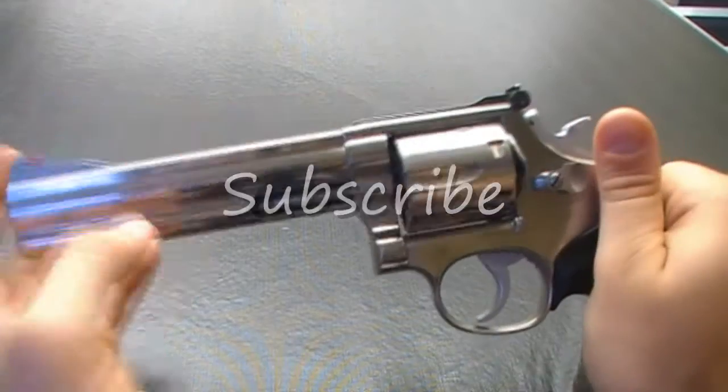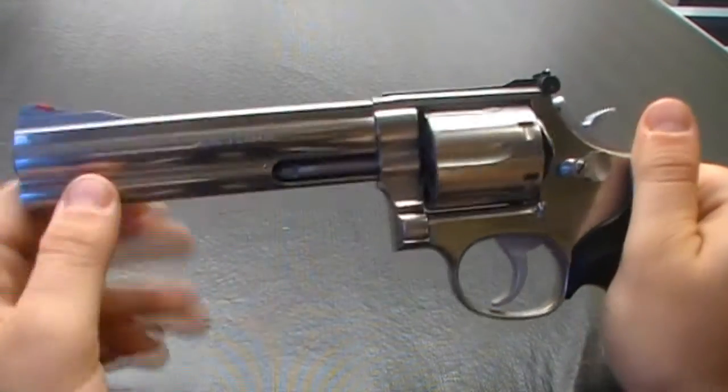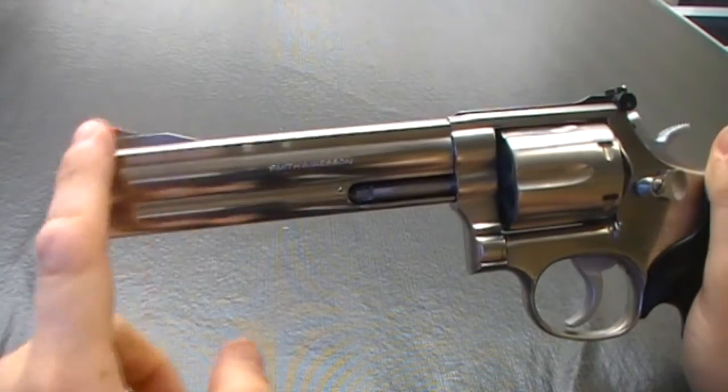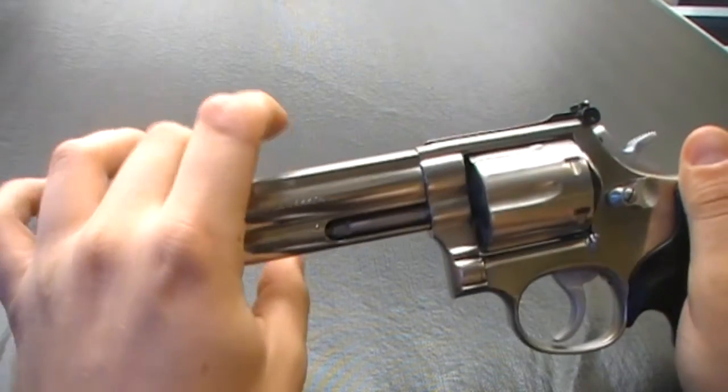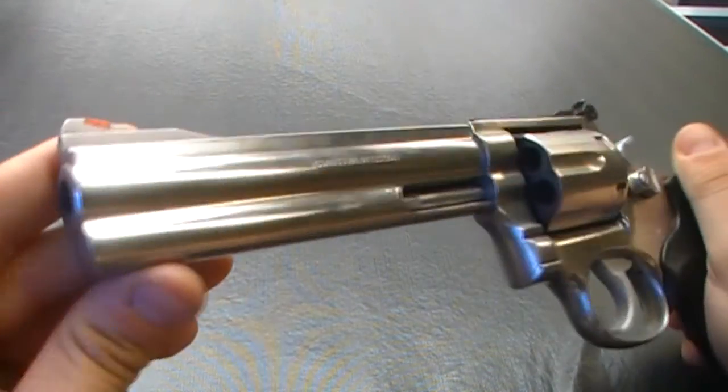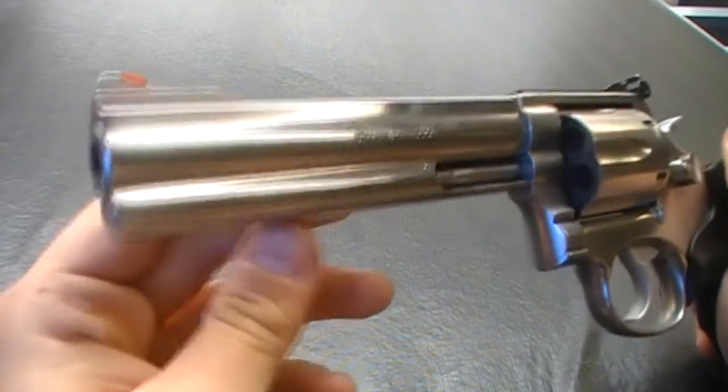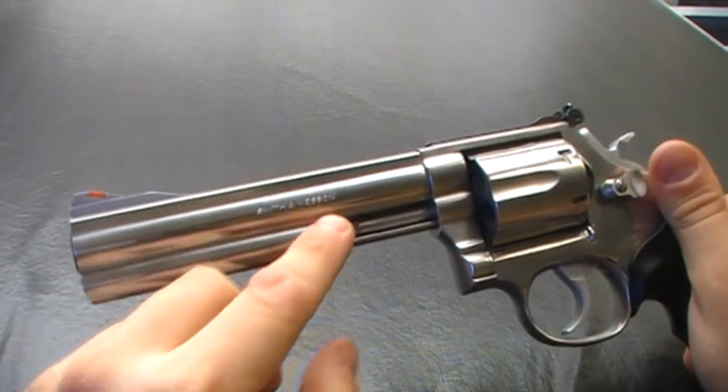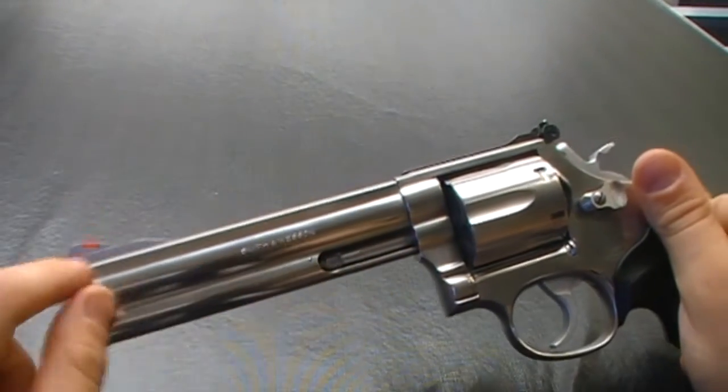You can get barrel swapped out for different Smith ones. You can get any sort of design you want. And you can get round barrels. You can get half lugs. Where that's cut off. It's just the barrel.